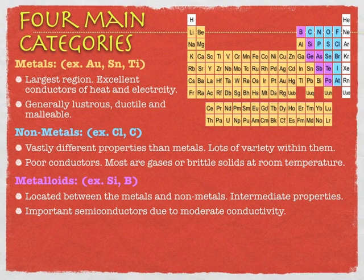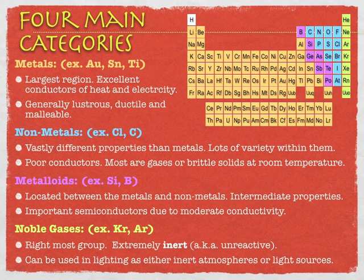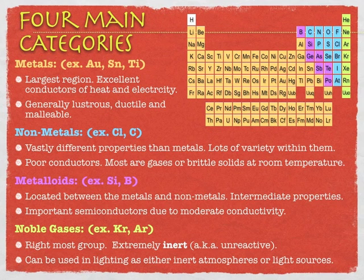Metalloids have intermediate properties — they're not great conductors, but they're not bad conductors either. You might even call them semiconductors, and that's where you'll find things like silicon. Then there are the noble gases — not to be confused with Alfred Nobel, who won the Nobel Prize. These are named after the term 'noble,' like a noble king, someone who doesn't want to mess with other people. They are inert and unreactive, though they still have many uses we will explore.